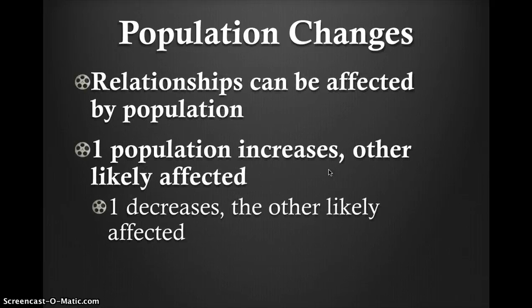Population fluctuations are mainly affected by relationships. As the population of one organism increases, the other organism in the relationship will most likely be affected. This works the same way for a decrease in one organism's population. The food chain and food web will be affected by changes in population, because if there are fewer producers at the bottom of the chain, there can only be a certain number of consumers who feed on the producers.